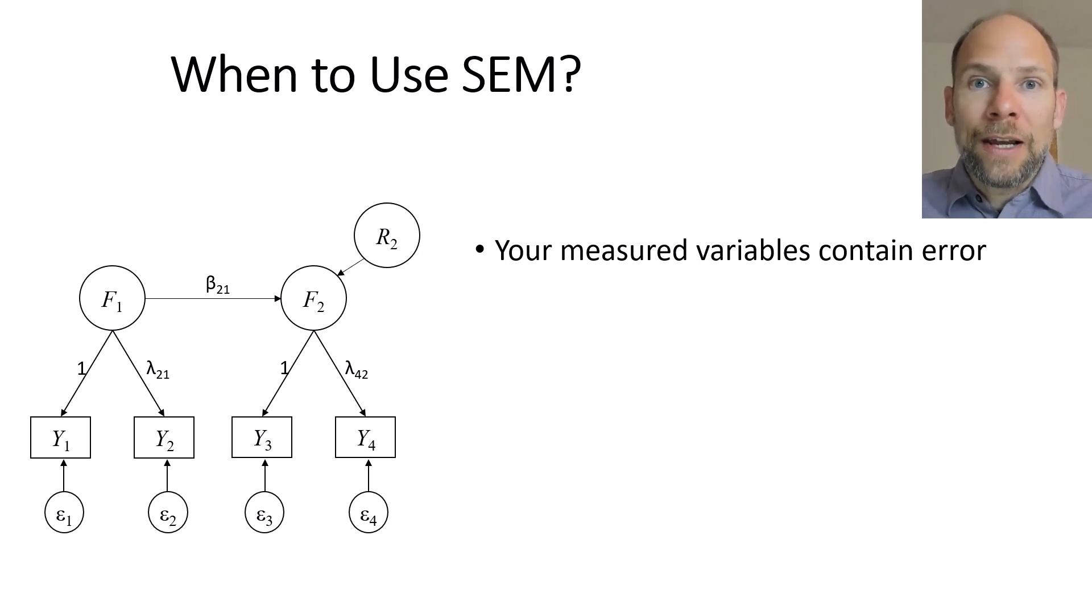SEM provides a correction for measurement error by introducing latent variables. As you can see here in this example latent regression model on the left hand side of the screen, you can see we have two factors F1 and F2 and F1 is measured by Y1 and Y2. We're assuming both Y1 and Y2 may not be perfectly reliable measures of that factor F1 and therefore we have error terms in the model Epsilon 1 and Epsilon 2 reflect measurement error and or specific variance in those indicators Y1 and Y2. Likewise for factor F2, we have two indicators Y3 and Y4 and they both are also assumed to potentially contain measurement error as reflected in the measurement error variables Epsilon 3 and Epsilon 4.